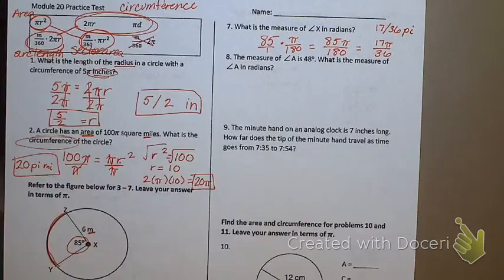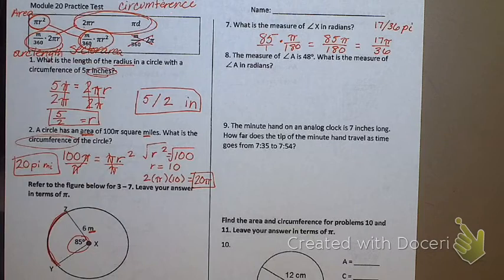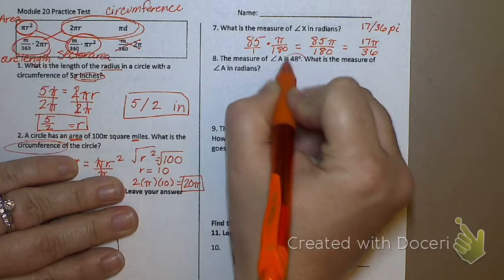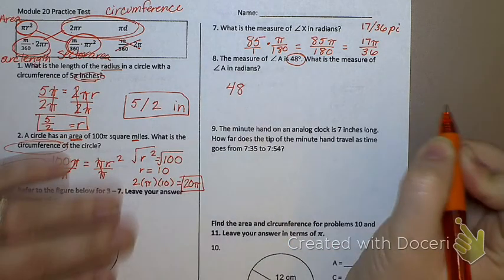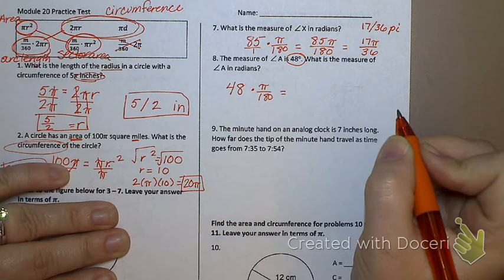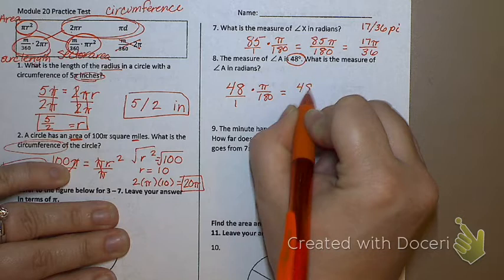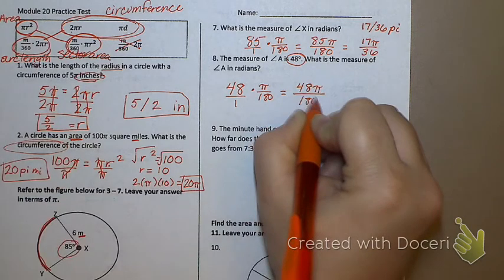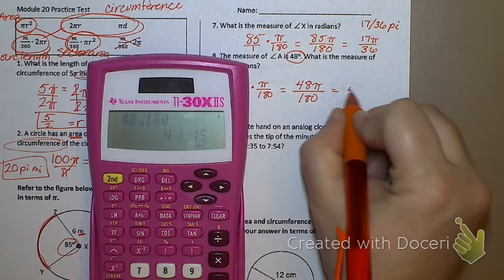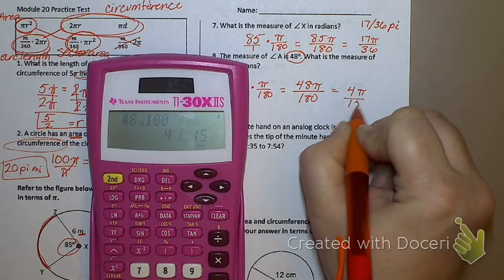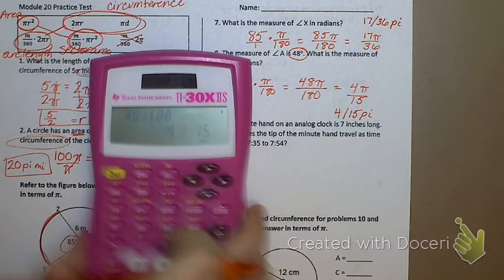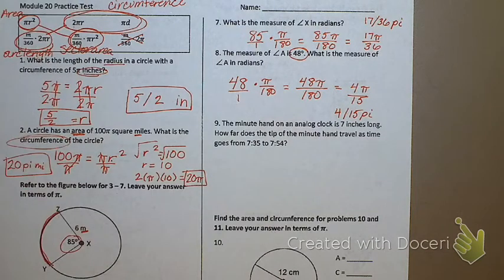The measure of angle A is 48 degrees. What is the measure of angle A in radians? I need to take 48 degrees and change it to radians, which means I multiply it by pi over 180. That gives me 48 pi over 180. So 48 over 180 gives me 4 pi over 15. I would type into my computer 4 slash 15 pi.